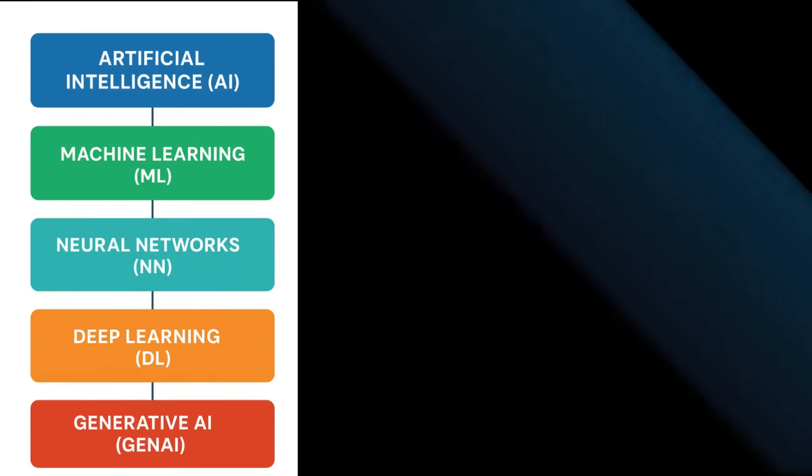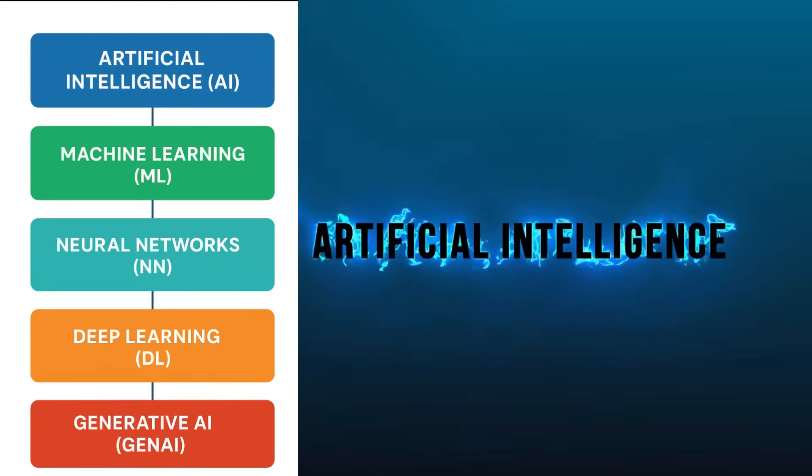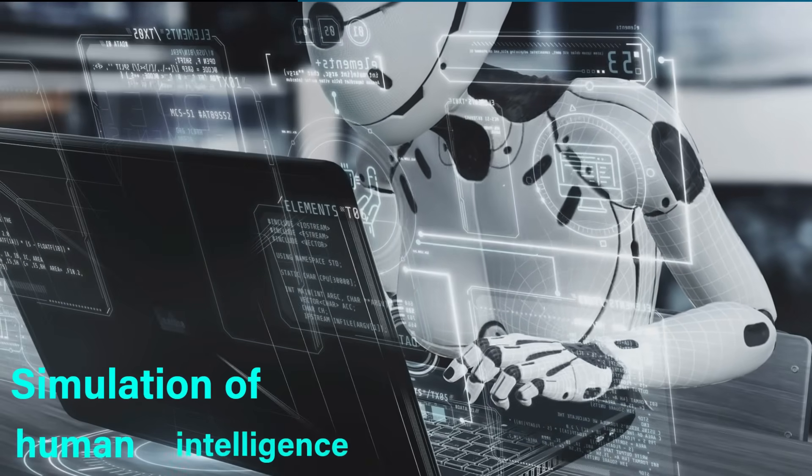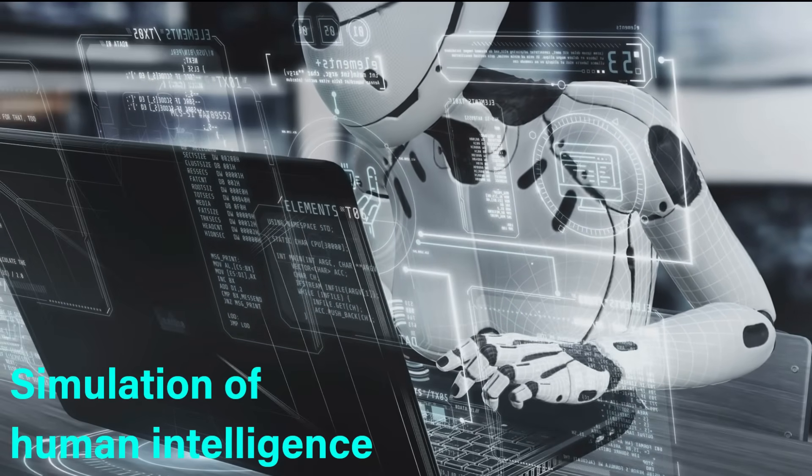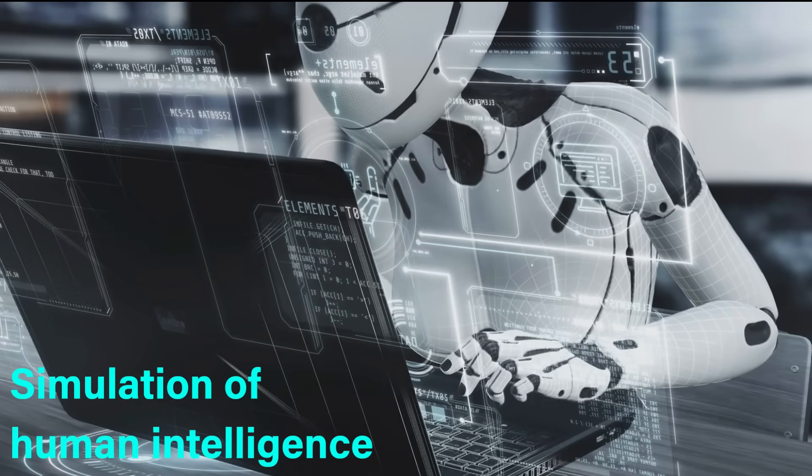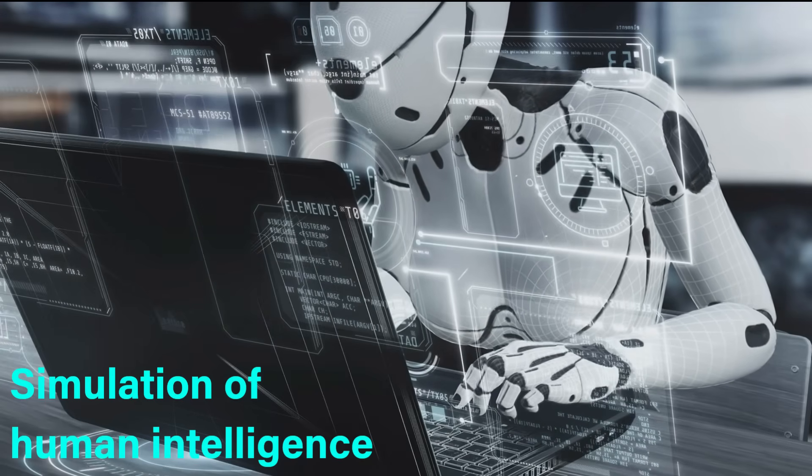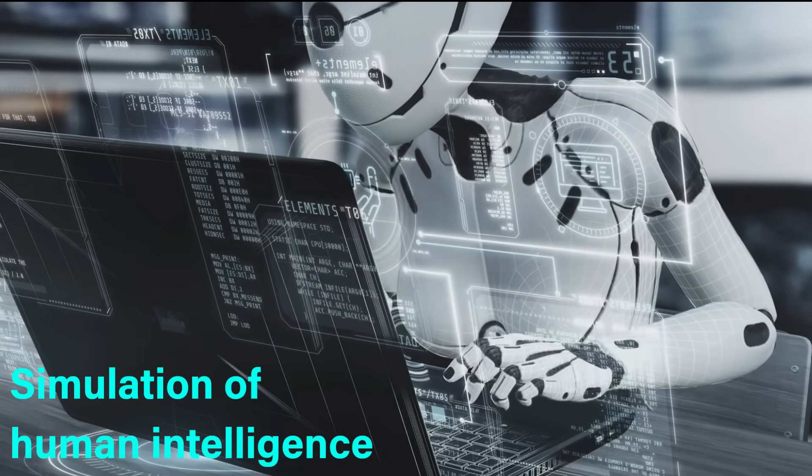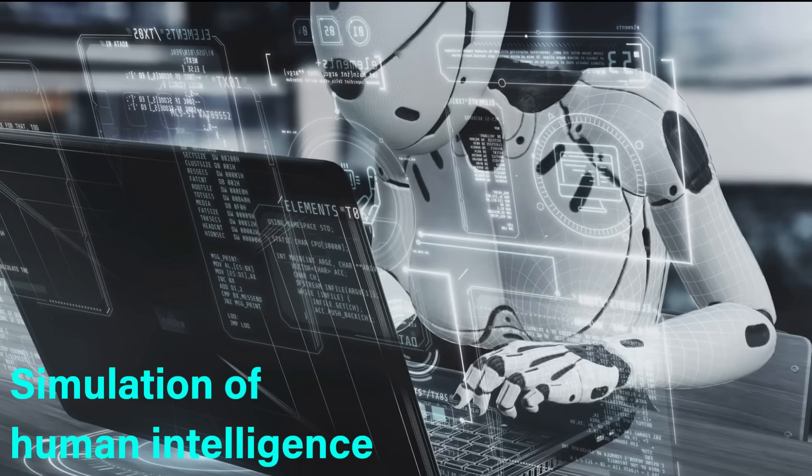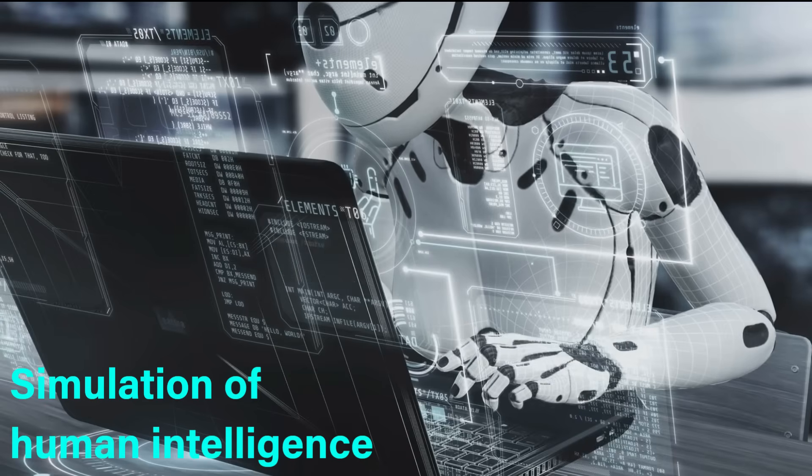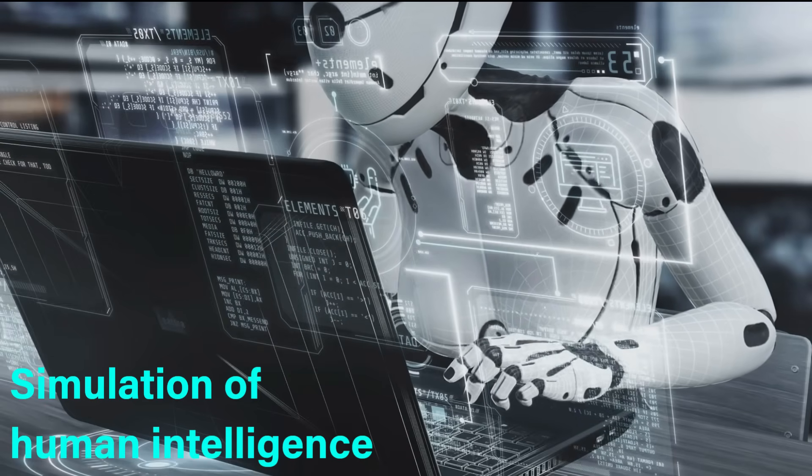Artificial intelligence is the simulation of human intelligence in machines programmed to think and learn like a human. Any system that can perform tasks requiring human intelligence, which include reasoning, problem solving, perception, planning, language, and more. That's an AI system. It's a broad field of AI. It covers all the components of artificial intelligence.